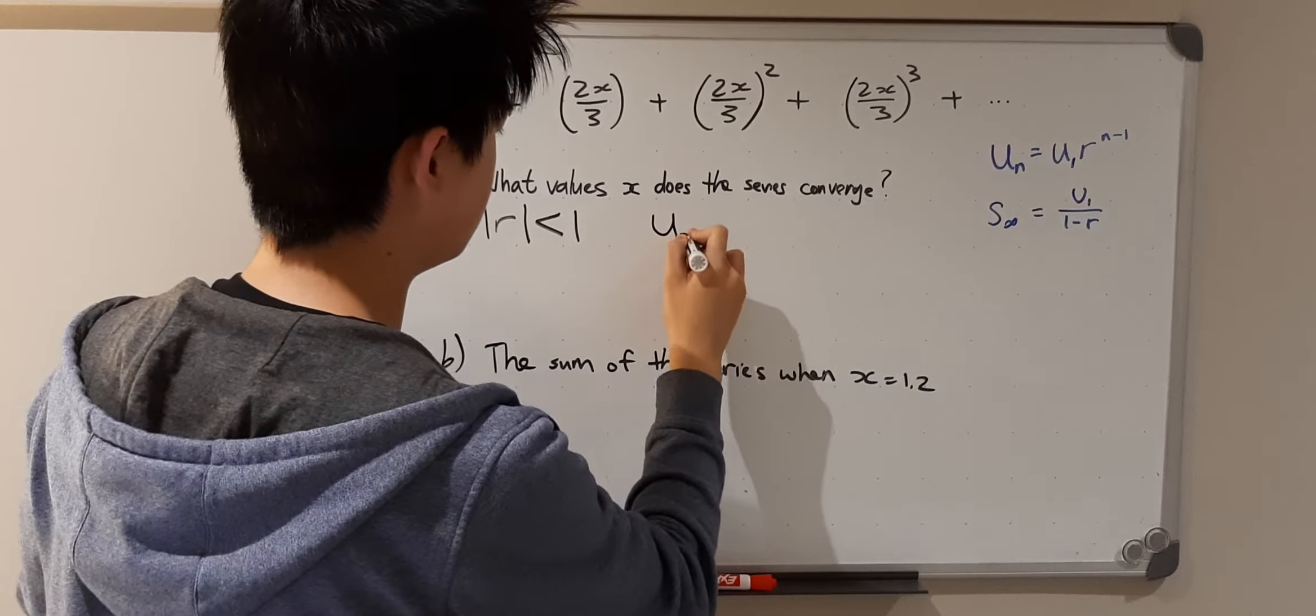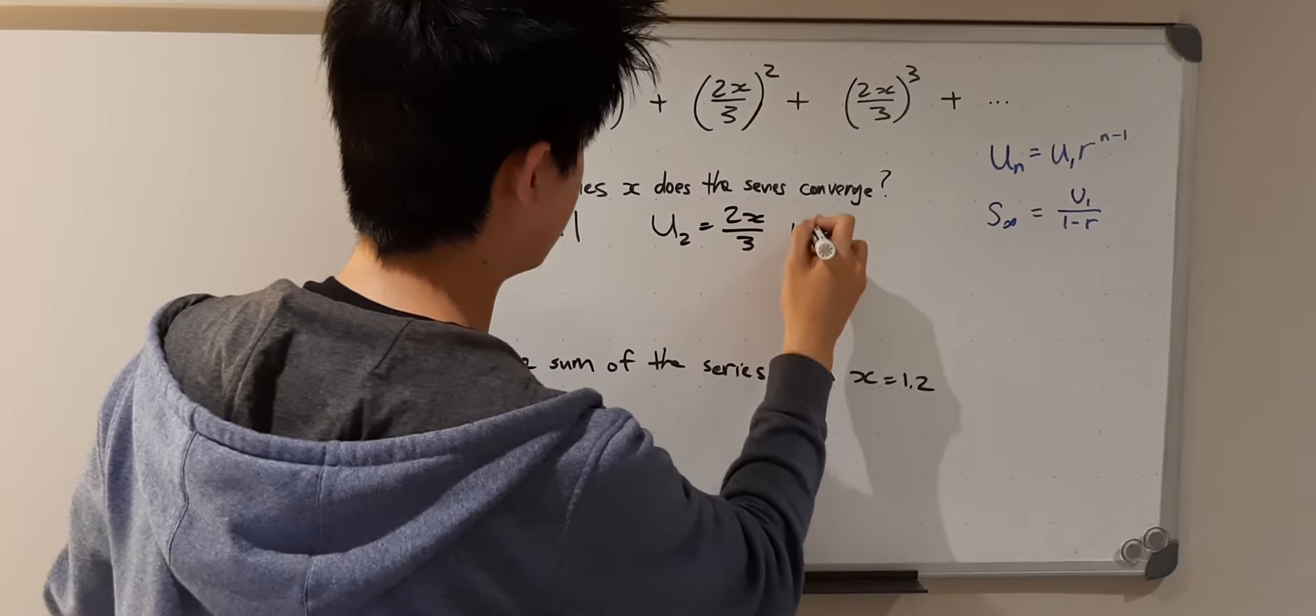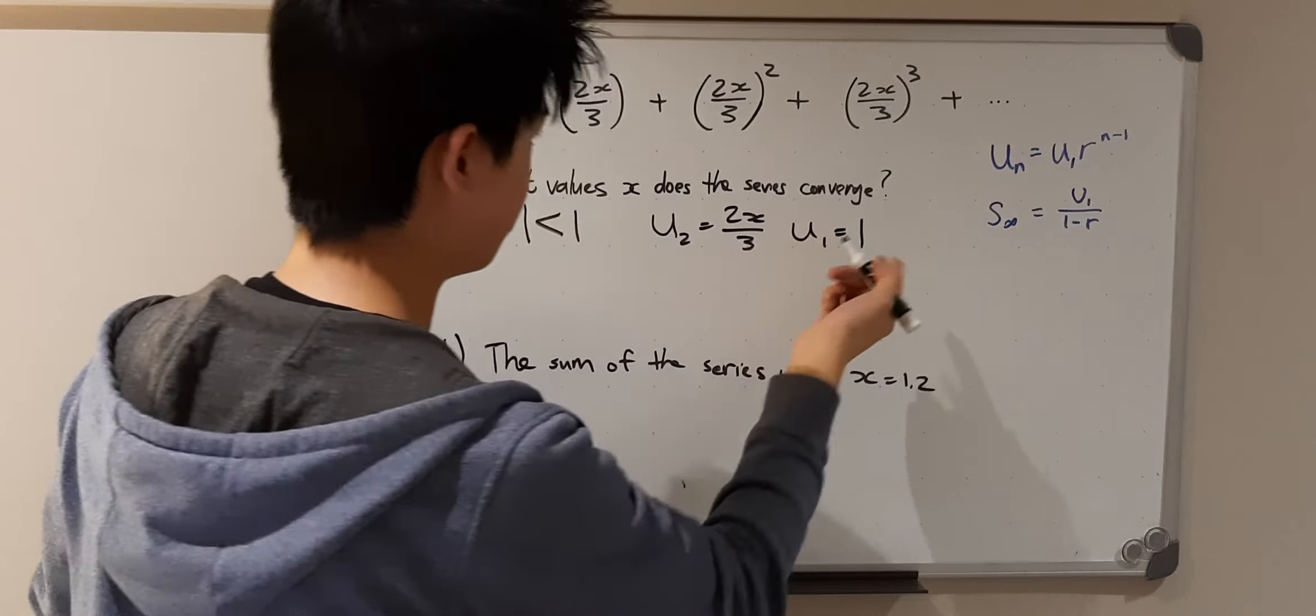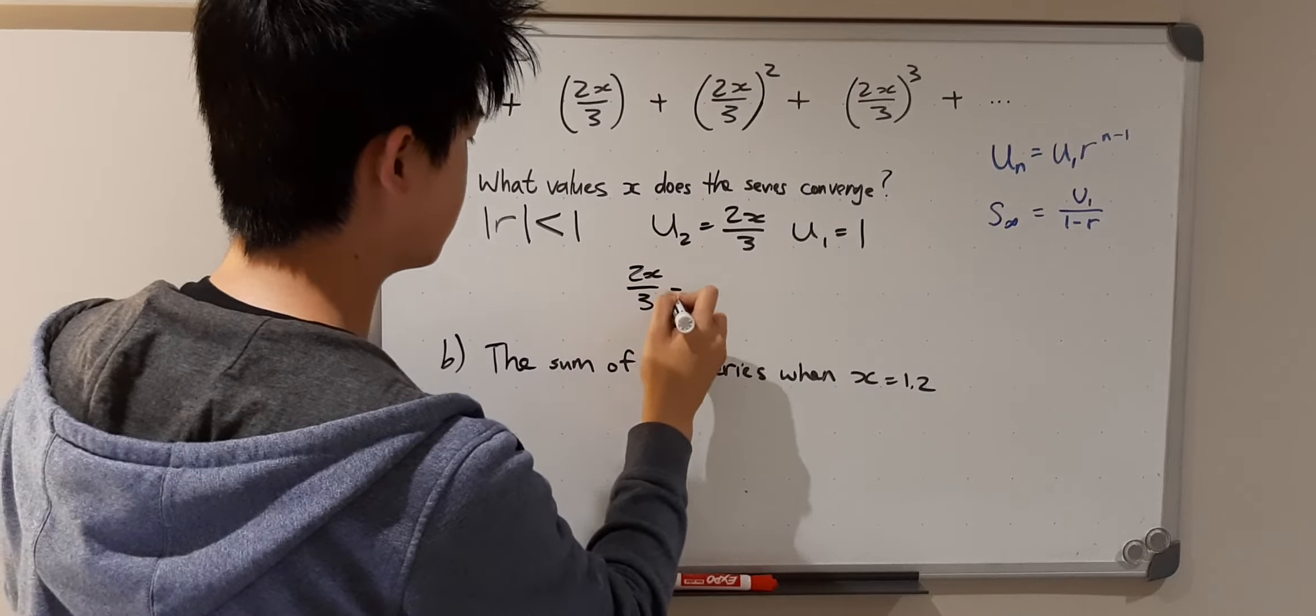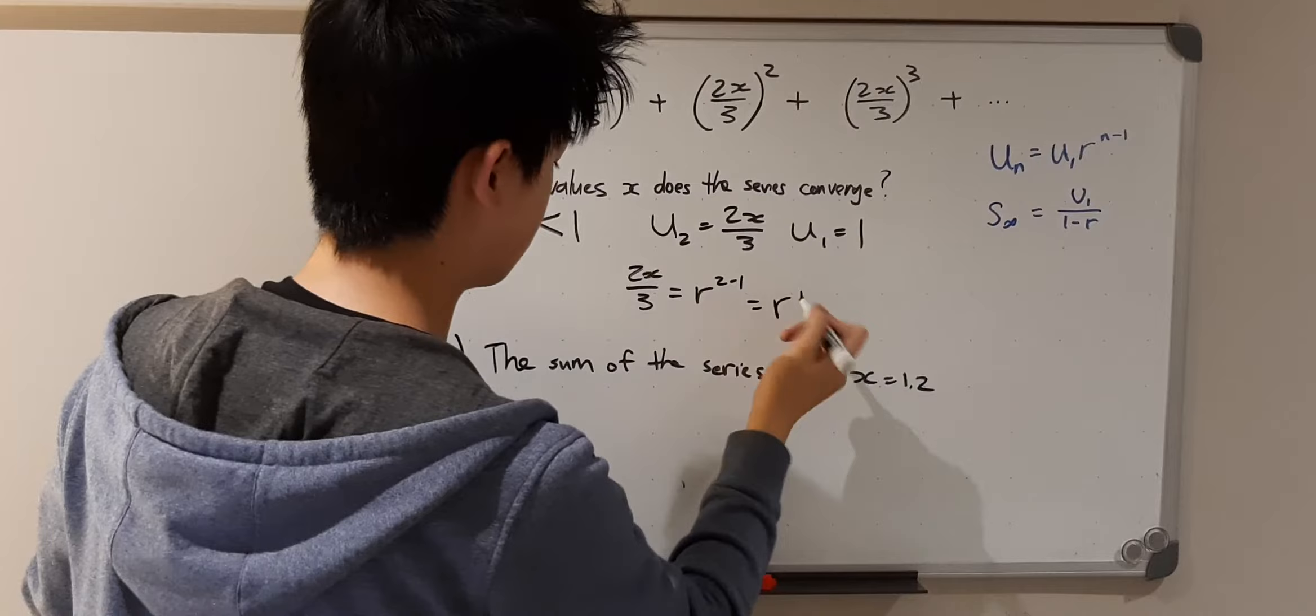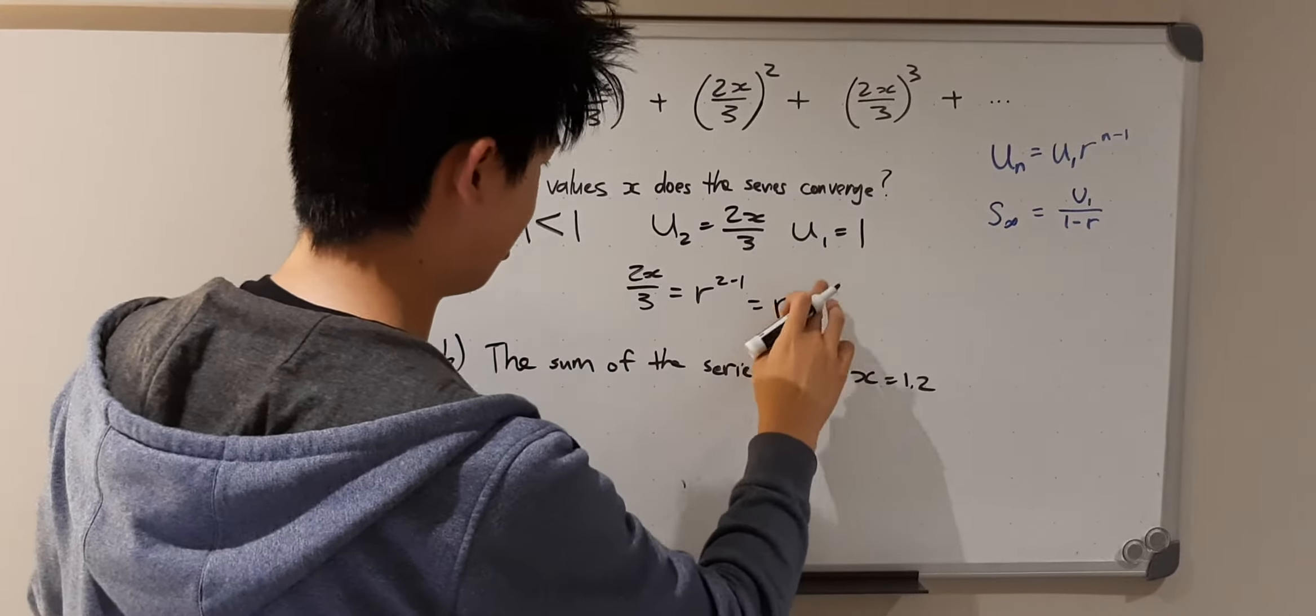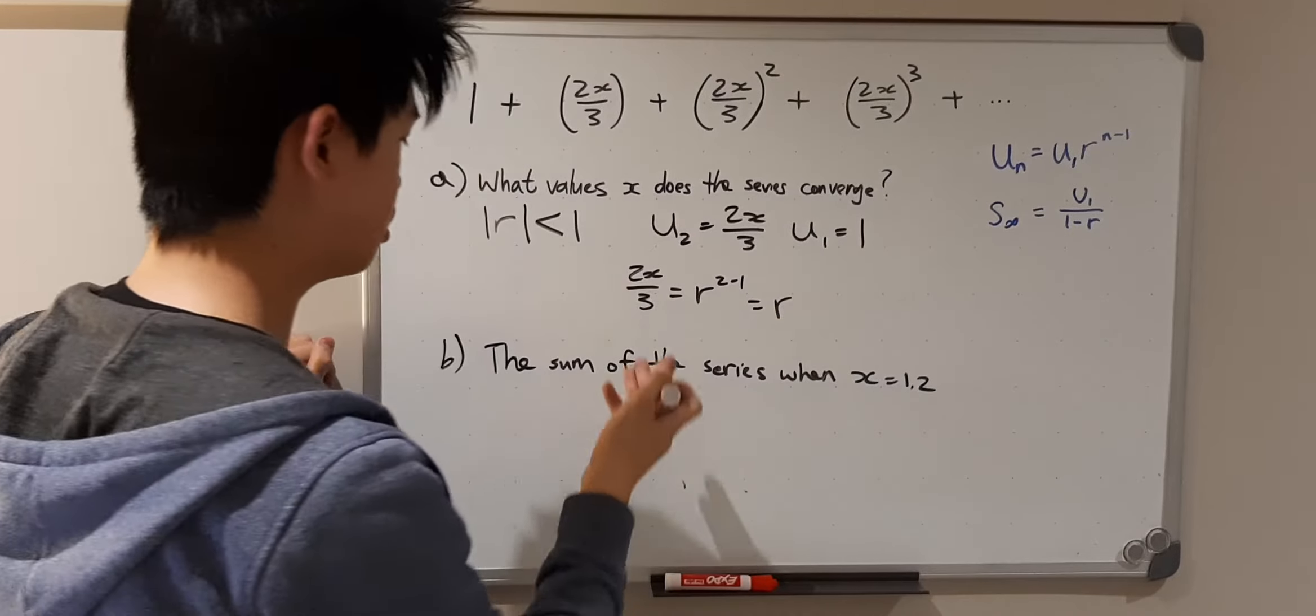So we know that u2 is equal to 2x over 3, and u1 is equal to 1. So if we input that, therefore 2x over 3 is equal to r to the 2 minus 1, which is equal to r to the 1, or which is just r. So therefore we know r is equal to 2x over 3.